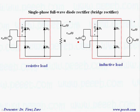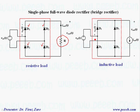In some applications, if isolation is not required, we can have a full-wave diode rectifier without any transformer. In this case we need four diodes, and we can have either a resistive load or an inductive load. For an inductive load, if the current through the inductor is continuous, we can model it as a current source and analyze the circuit accordingly.